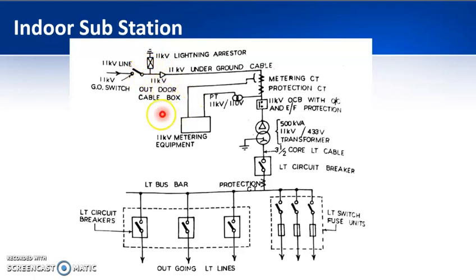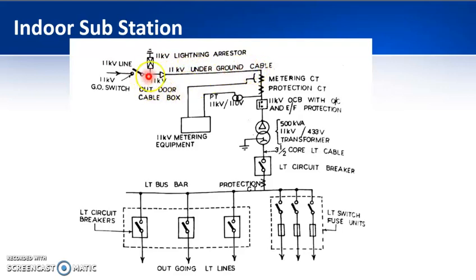From the lightning arrestor, the supply is given to an outdoor cable box of 11 kV rating. Because whatever line is being taken from the distribution line, the power now has to be transmitted through an underground cable. So here you have an 11 kV underground cable. This outdoor cable box is to be kept outside, and from there you need to have a provision for metering.